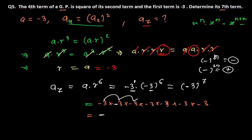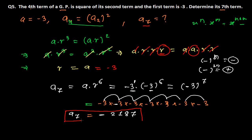Now multiplying 3 seven times: 3×3=9, 9×3=27, 27×3=81, 81×3=243, 243×3=729, 729×3=2187. So the seventh term is minus 2187.